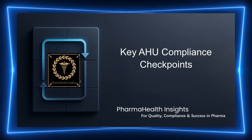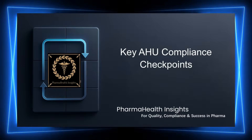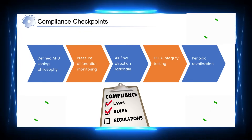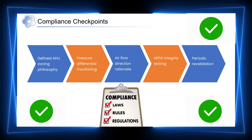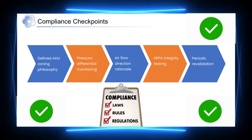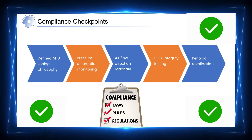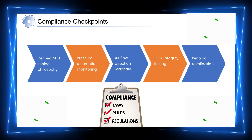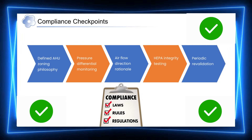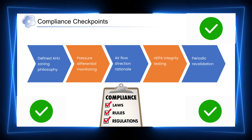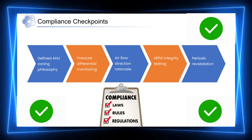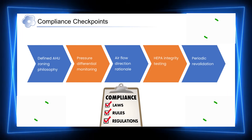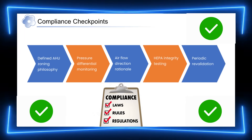And these expectations translate into specific checkpoints. Auditors typically focus on a clearly defined AHU zoning philosophy that supports segregation and contamination control. Pressure differentials must be continuously monitored, and airflow direction should be clearly understood and justified. In addition, HEPA filters must be periodically integrity tested, and the overall AHU performance should be reviewed through revalidation at defined intervals. These checkpoints together demonstrate that the AHU is operating in a controlled and compliant manner.